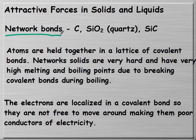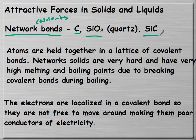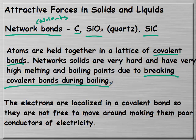Network covalent solids include carbon—whether diamond, graphite, fullerenes, or buckyballs—silicon dioxide, and silicon carbide. In a network covalent solid, atoms are held together in a lattice of covalent bonds. They are very hard with very high melting and boiling points because covalent bonds must be broken during boiling. It's the only type where you break a covalent bond—all others just break forces. Electrons are localized in covalent bonds, so they are not free to move, making them poor conductors.